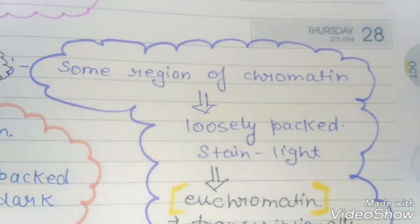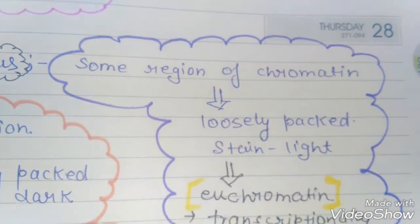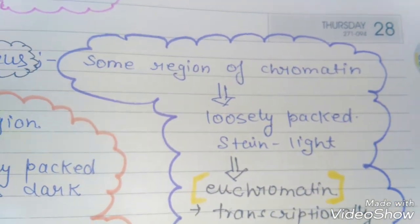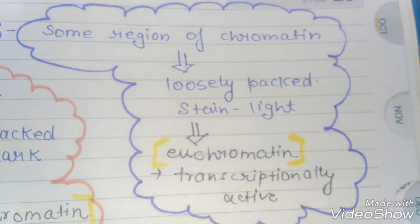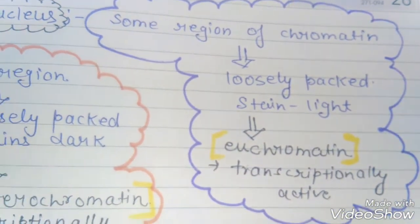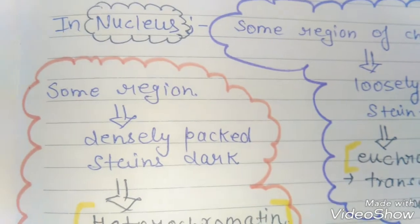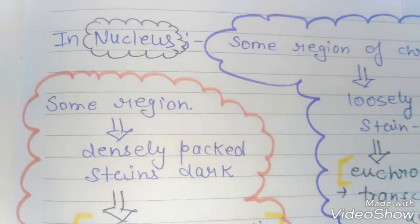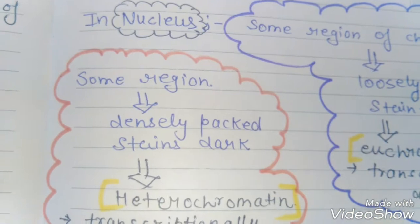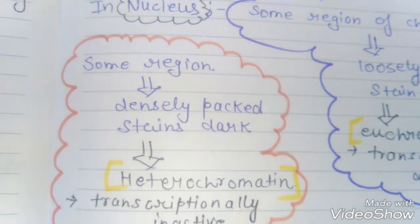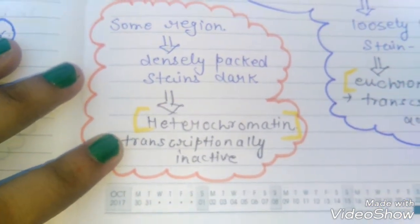In the nucleus, some regions of chromatin are loosely packed and show light staining — these are called euchromatin, which is transcriptionally active. Some regions are densely packed and stain dark — these are called heterochromatin, which is transcriptionally inactive.